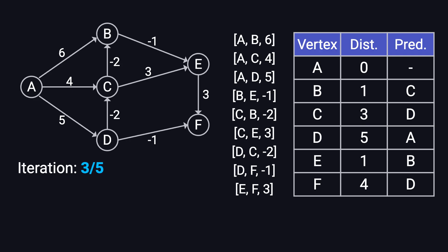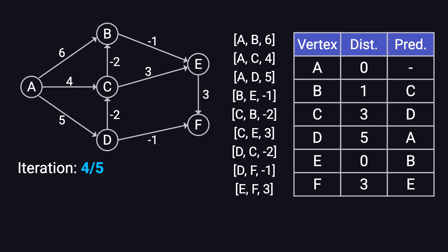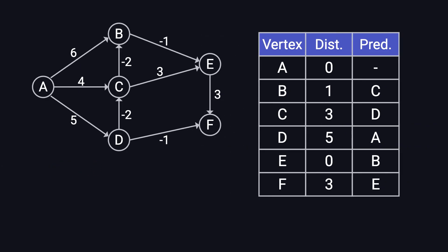In the third iteration, some shortest distances update further. At this stage, the shortest distance from A to E reduces to zero, and A to F decreases to three. The predecessor of F changes from D to E. By the fourth iteration, no further updates occur, meaning the algorithm has converged early and the shortest path results are now final. The final shortest distances from A to A, B, C, D, E, and F are zero, one, three, five, zero, and three, respectively.